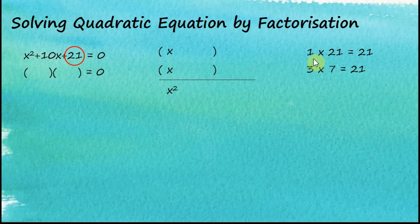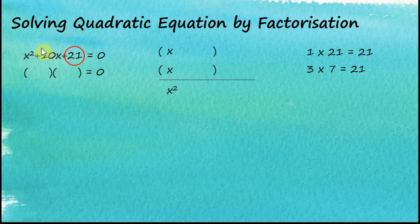We can put these factor pairs into the brackets to see whether we get 10x. We have a guide: the sum of the two factors should equal the coefficient of the x term. So 1 plus 21 equals 22, and 3 plus 7 equals 10. So it looks like 3 and 7 is the better choice.